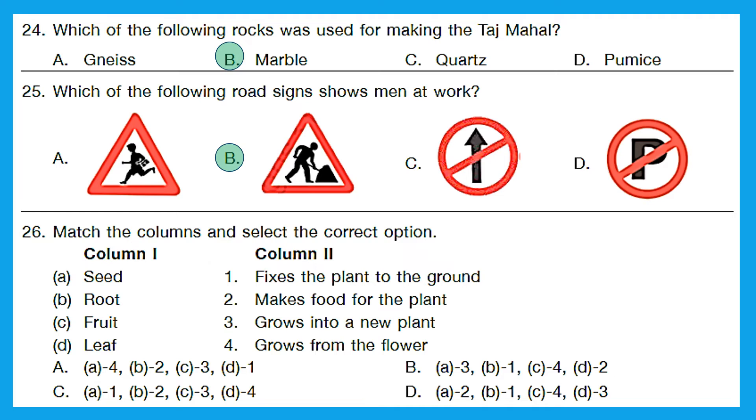Question 26. Match the columns and select the correct option. Column 1, seed. Now seed would match 2, grows into a new plant. E matches 3. Next one is root. Root fixes the plant to the ground. B matches 1. Fruit makes food, no. Fruit grows from the flower. And leaf makes food for the plant. So here the right option would be option B. Because A matches 3, D matches 1, C matches 4, and B matches 2.